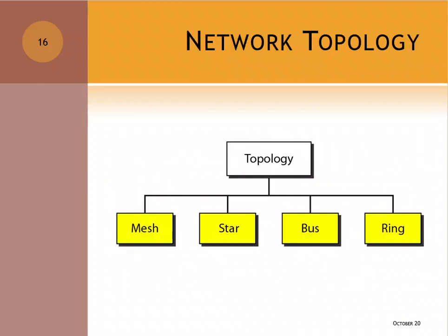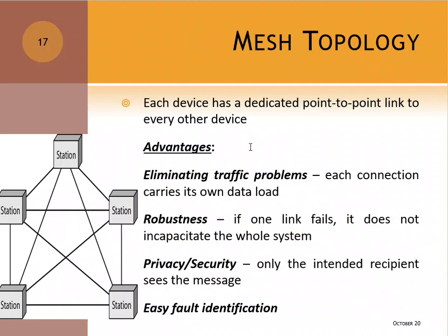Next, we move to network topology. When talking about networks, the type of connection is related to topology. There are four types of topologies: mesh, star, bus, and ring. It is important to know the advantages and disadvantages of each topology. The first one is mesh topology — each device has a dedicated point-to-point link to every other device.